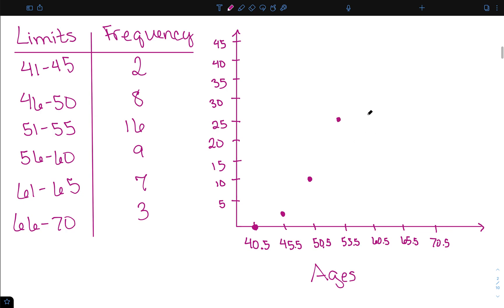26 plus 9 is 35. 35 plus 7 is 42. 42 and 42 plus 3 is 45.